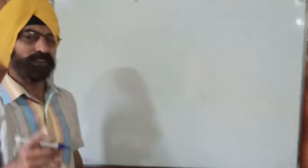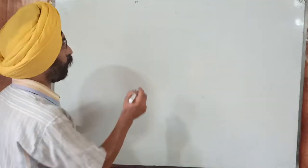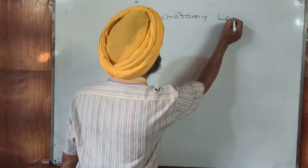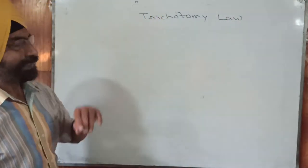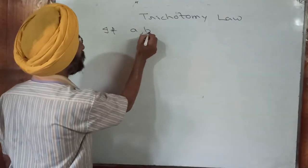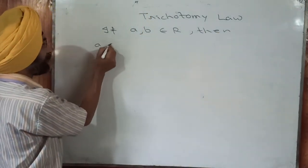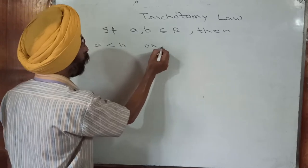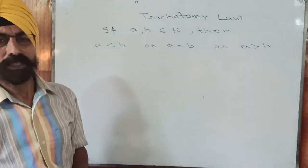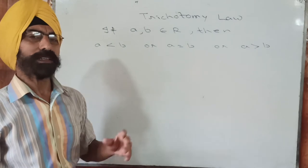Now the first thing I'm going to tell you is that there is a law known as the trichotomy law. This law states that if A and B are real numbers, then either A is less than B, or A is equal to B, or A is greater than B.